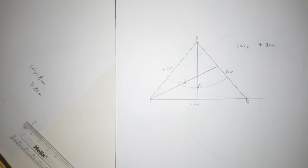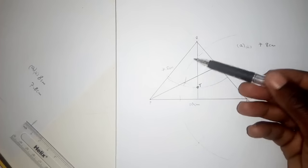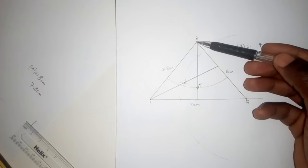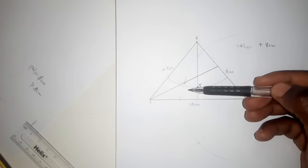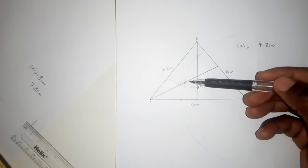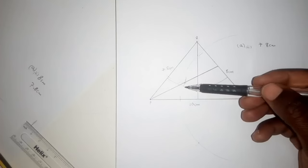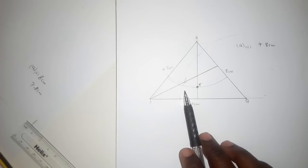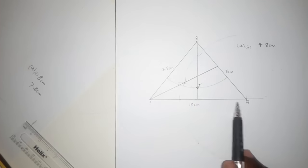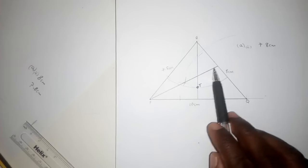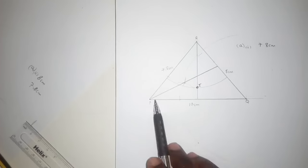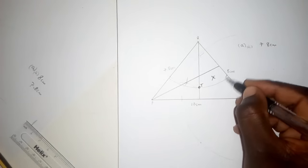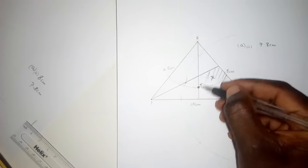Another point X is such that it is less than or equal to 5 centimeters from R, nearer to Q than to P, and nearer to PQ. So it's supposed to be before or on the arc — on the side where Q is, not after the arc. The region is over here. Shade that region and label it point X.